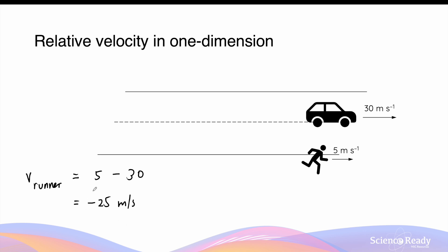The minus here indicates that the velocity is heading the other way — to the left. So 25 meters per second to the left. This means from the perspective of the car, the runner will appear to be going backwards towards the left at 25 meters per second. That is the velocity of the runner relative to the car.